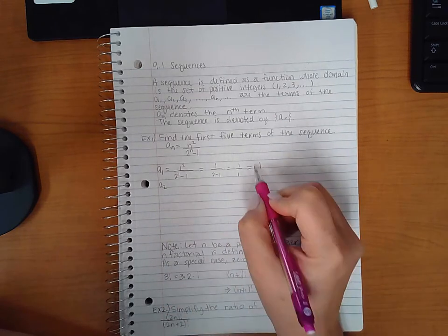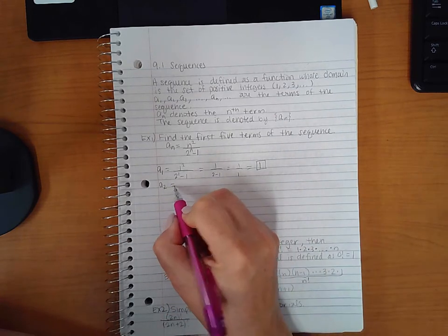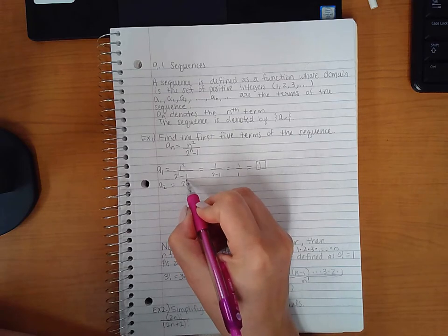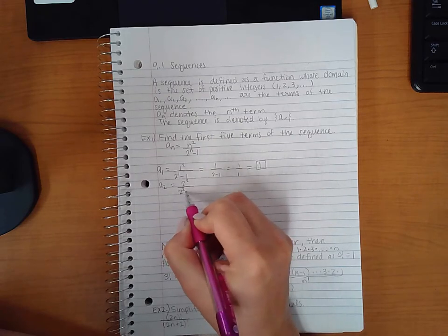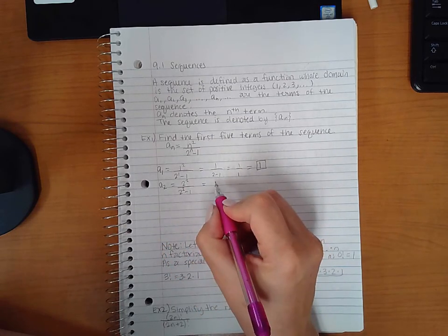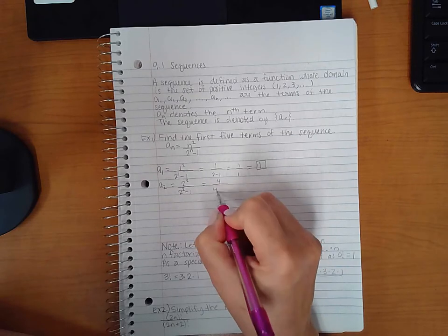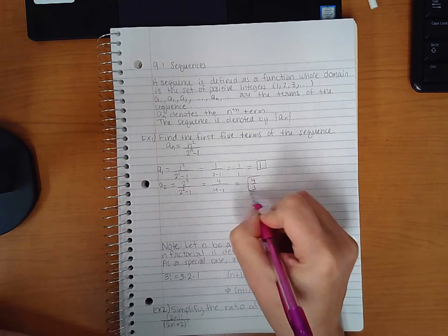Then for A2, we're going to plug in 2 for n. So we get 4 over 4 minus 1, which is 4 thirds.